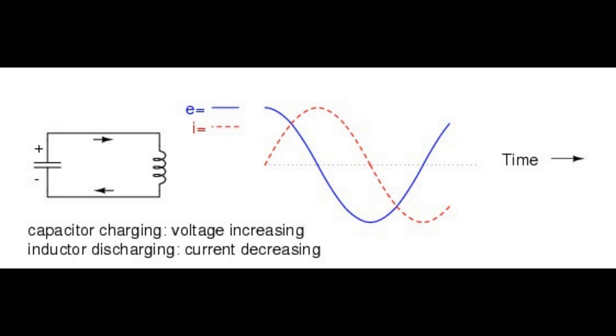The inductor, desiring to maintain current in the same direction, will act like a source again, generating a voltage like a battery to continue the flow. In doing so, the capacitor will begin to charge up and the current will decrease in magnitude.